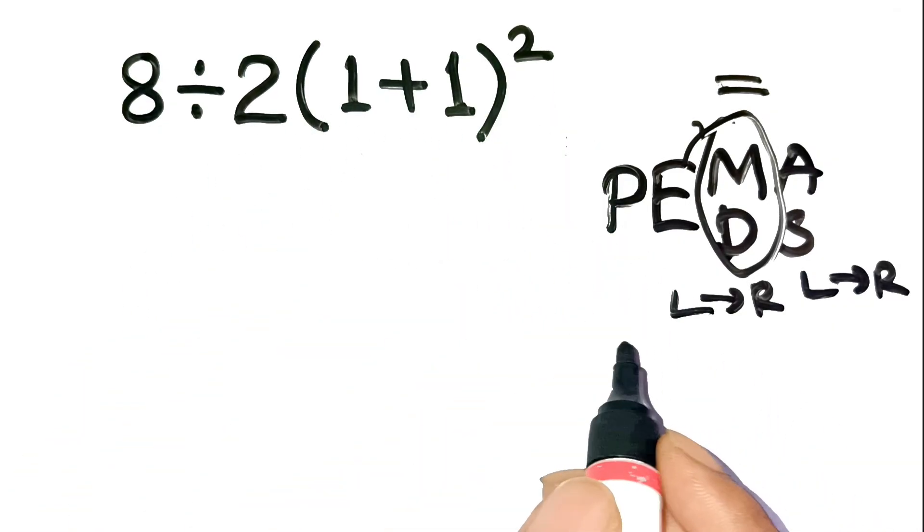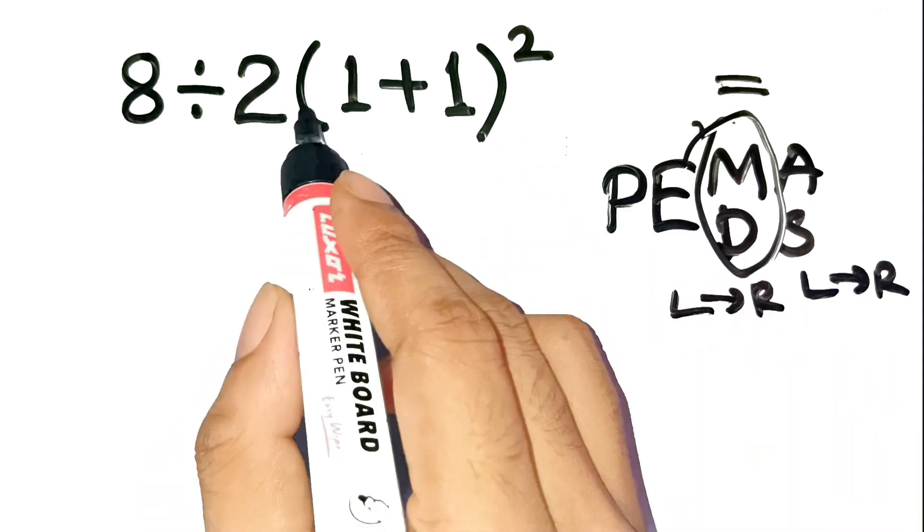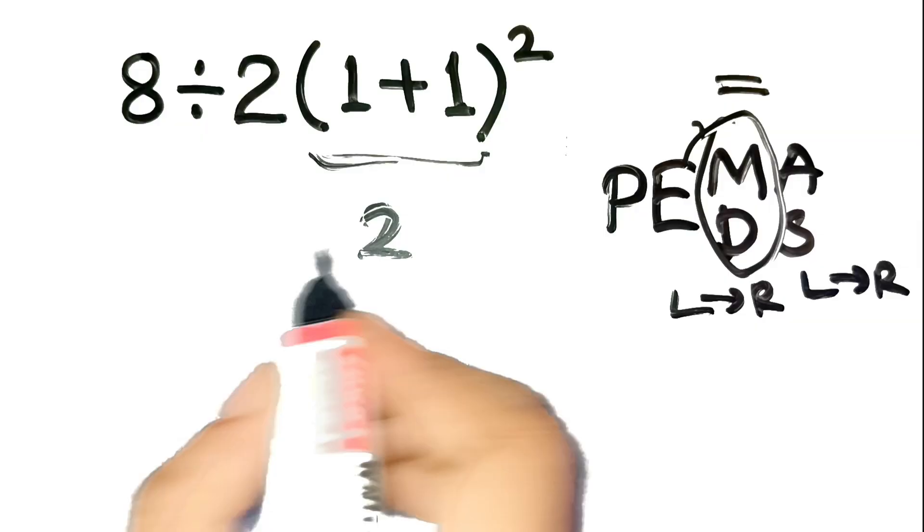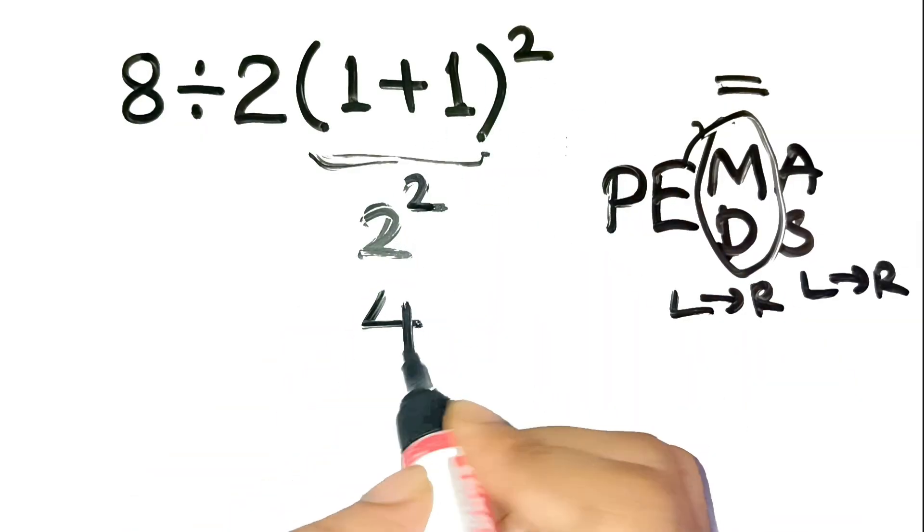Let's carefully solve it step by step. First, solve inside the parentheses: 1 plus 1 is 2. Next, handle the exponent: 2 squared equals 4.